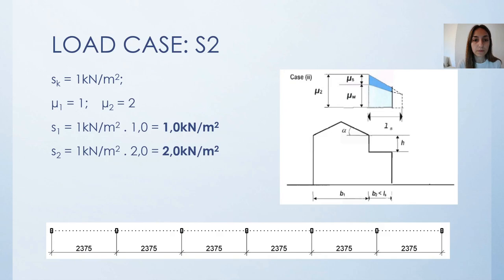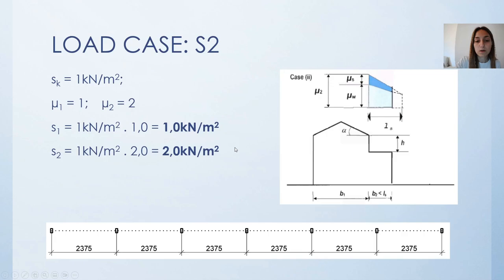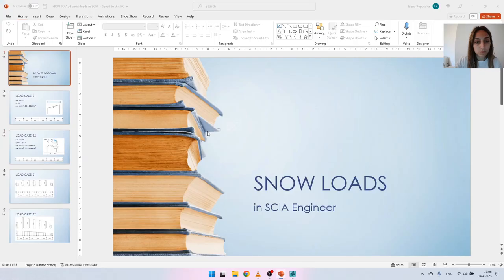Moving on to the next load case, this one considers snow sliding from a taller building located next to our roof, as well as a small amount from wind blowing towards the facade of the taller building and drifting the snow on our roof. For this load case we will work with a trapezoidal shape of a surface load where the maximum value will be 2 kN per square meter while the minimum value will be 1 kN per square meter.